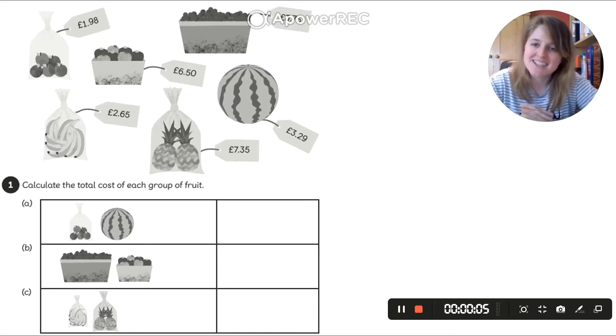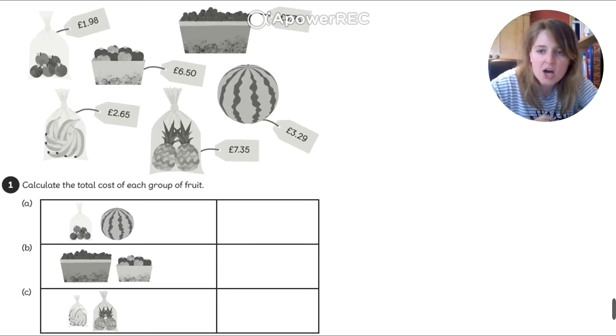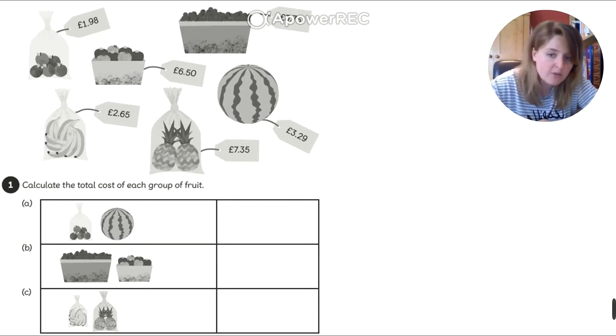So here I've created my own little shop. I'm now shopkeeper Miss Jones. So as you can see I've got some apples which are worth £1.98. I've got some tomatoes which are £6.50. I've got some cherries which are £5.75. I've got some bananas which are £2.65. I've got some pineapples which are £7.35. And I've got a watermelon that is £3.29.